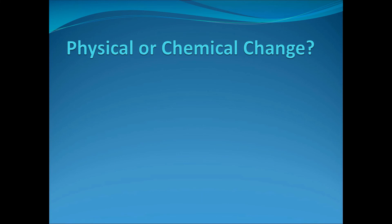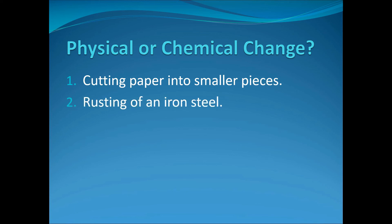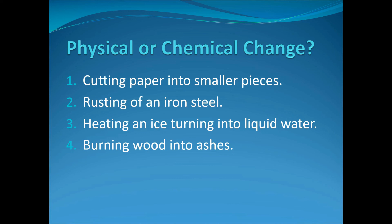Let us now identify what type of change is happening to these following examples. The cutting of paper into smaller pieces is a physical change. Rusting of an iron steel is a chemical change. Heating ice turning into liquid water is a physical change. Burning of wood turning into ashes is a chemical change. And lastly, the spoilage of food is a chemical change.